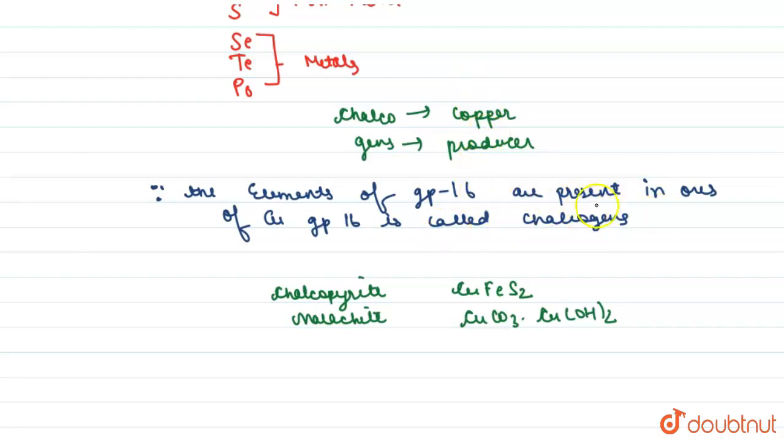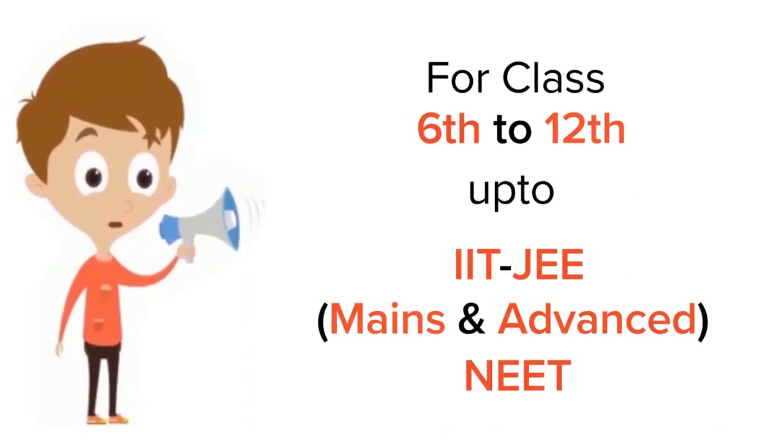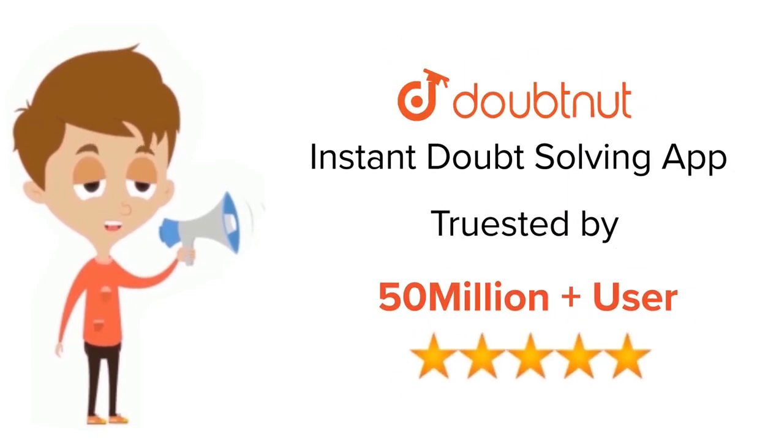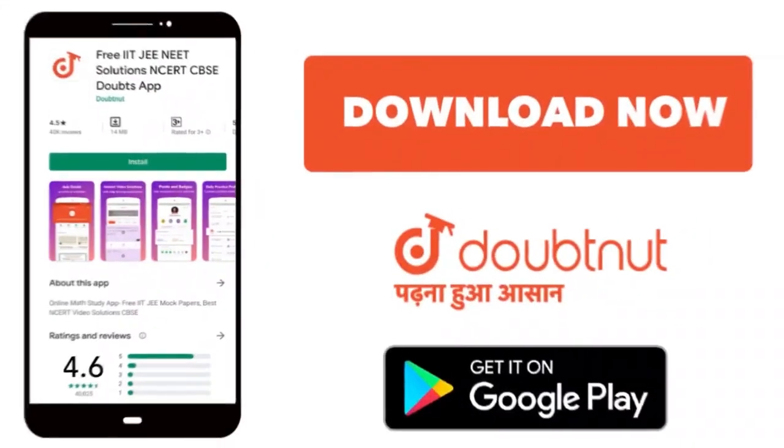in the ores of copper, these elements are called chalcogens. Get Doubtnet for classes 6 to 12, JEE and NEET preparation, trusted by more than 5 crore students.